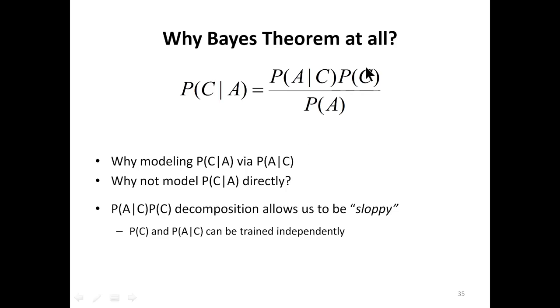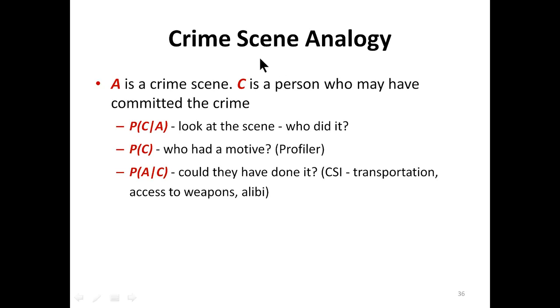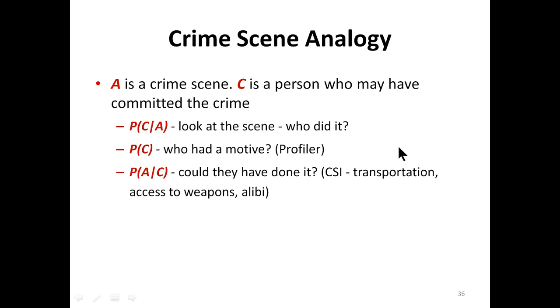Decision theory comes into the picture with Bayes' theorem. We calculate conditional probability — Bayes' door conditional probability — multiplied by the prior probability. We have prior probability P of C and prior probability of A. A crime scene analogy: A is a crime scene, C is a person who may have committed the crime. P of C given A looks at the scene — who did it. P of C is who had a motive. P of A given C is could they have done it. After our next discussion we will elaborate more on applying Bayes' theorem.